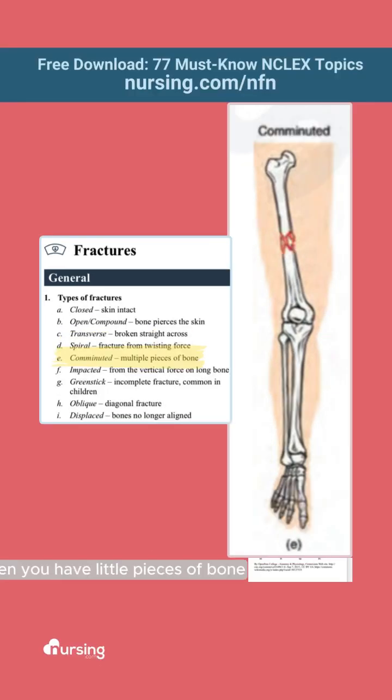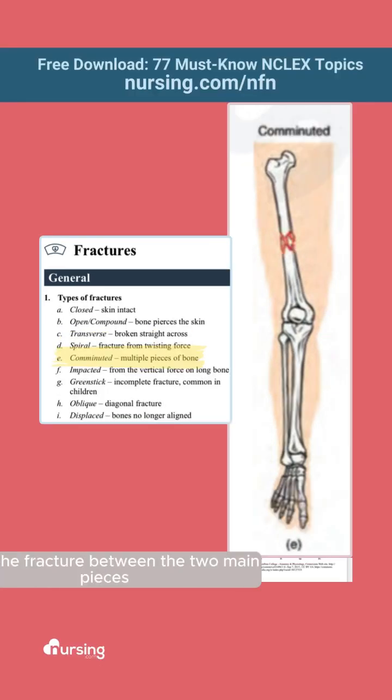Comminuted fractures is when you have little pieces of bone within the fracture between the two main pieces. This usually comes from some sort of crush injury.